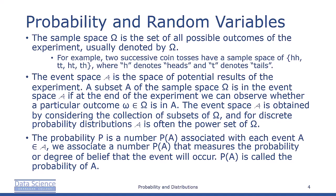The event space A is the space of potential results of the experiment. A subset A of the sample space omega is in the event space capital A if at the end of the experiment we can observe whether a particular outcome omega is in A. The event space A is obtained by considering a collection of subsets of omega, and for discrete probability distributions, this is often the power set of omega.